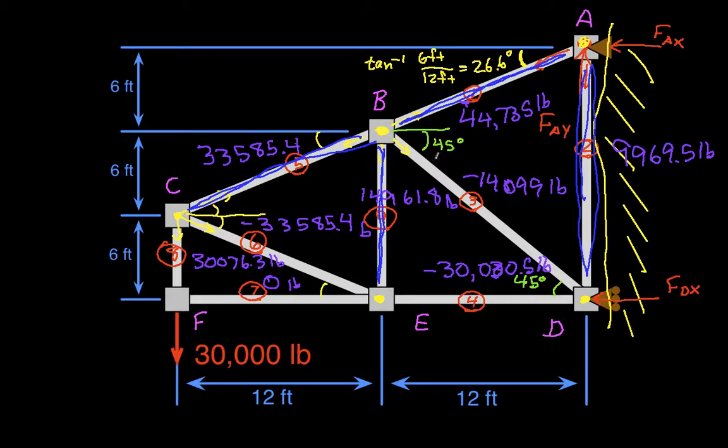The negative tensions that I've computed indicate that this member is actually in compression. This member is in compression. This member is in compression. I'm sorry, member 8 is in tension.